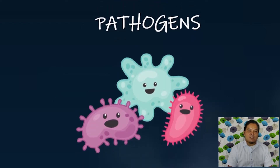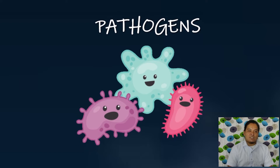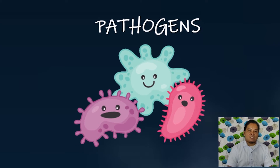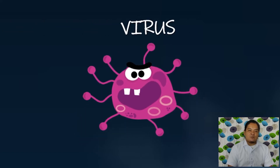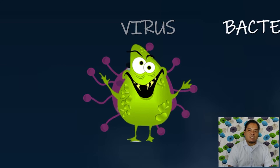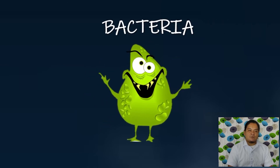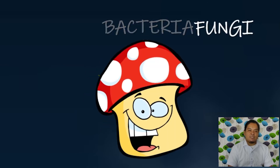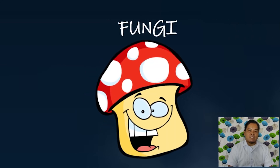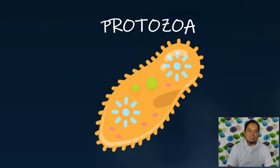Microorganisms that can cause diseases are called pathogens. We know that the disease starts from a pathogen. It is an agent like virus, bacteria, fungi, helminths, and protozoa that causes disease.